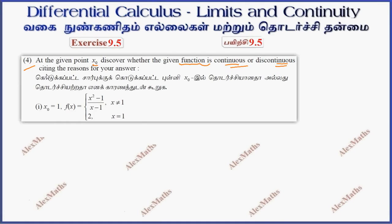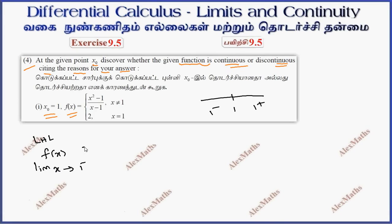We need to determine if it is continuous or discontinuous, citing the reason for our answer. The point x0 is 1. The function here is x squared minus 1 divided by x minus 1.